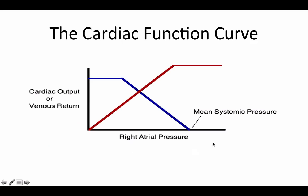Here is the actual cardiac vascular function curve. In red you have cardiac output compared with right atrial pressure, and then in blue you have venous return compared to right atrial pressure. When these two graphs are combined into one, it can help us predict what's going to happen to these variables when you have certain circumstances like exercise or hemorrhaging.